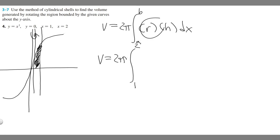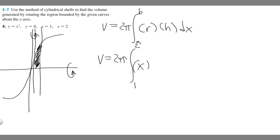What's your radius going to be? If you're rotating around the y-axis, it's always going to be x. Always x if you're rotating around the y-axis. If you're rotating around something else vertically it will be different, and if you're rotating around the x-axis it's always going to be y.